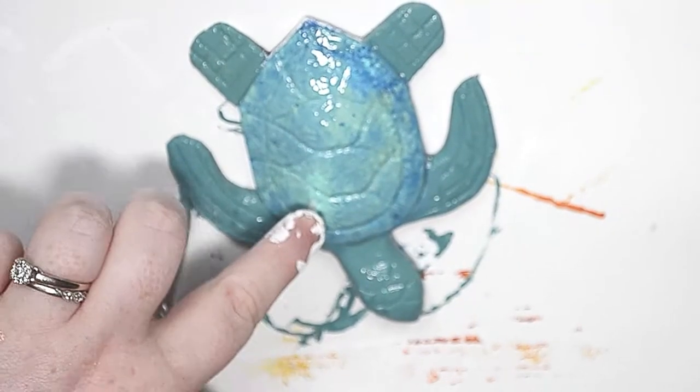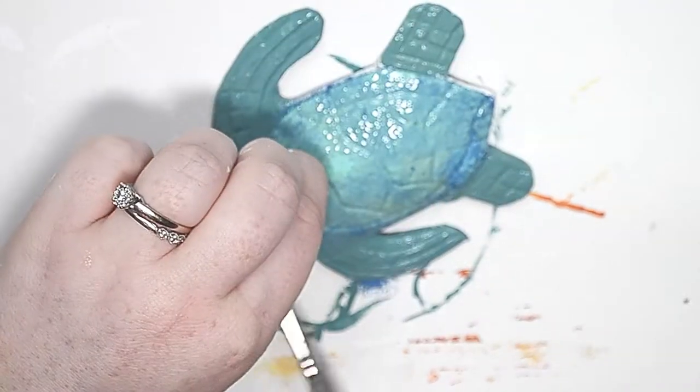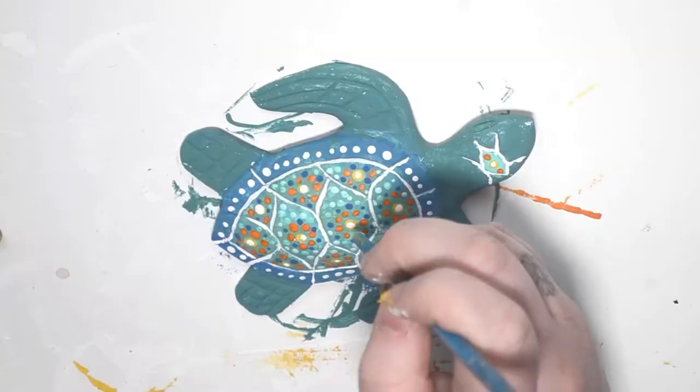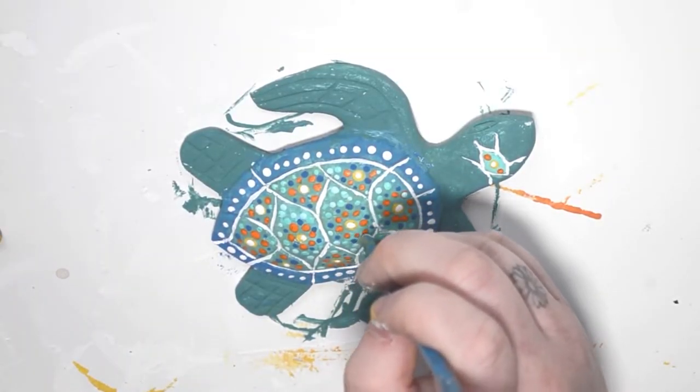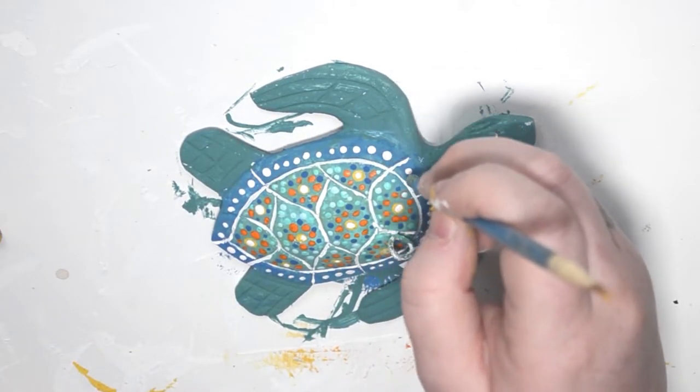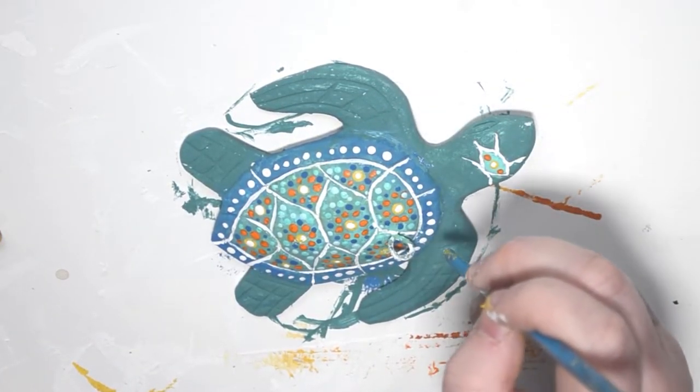I did a lot of dot work on his shell and on his head and outlined everything in white. I did this off camera because I really wanted to concentrate and make sure that the design was what I wanted it to be, but I did get the last couple dots on camera just to show you guys what I was doing.